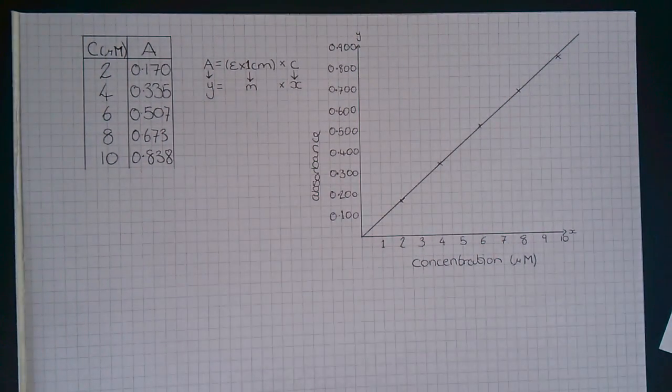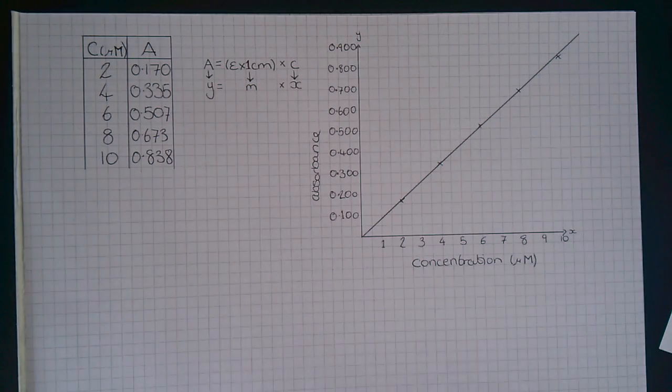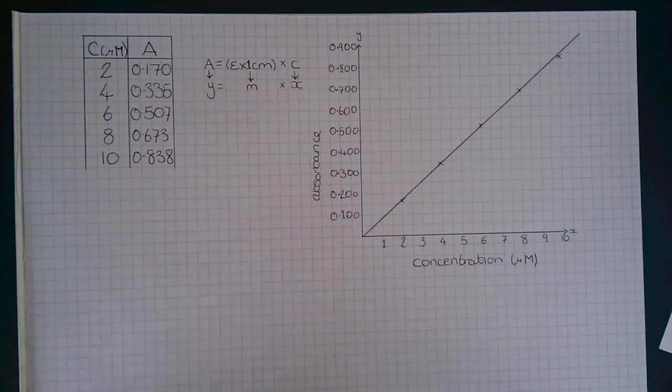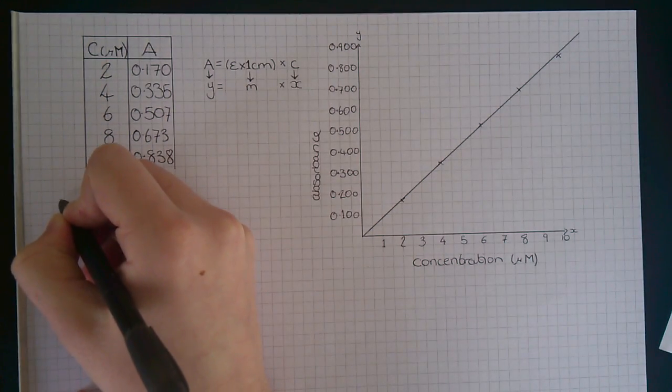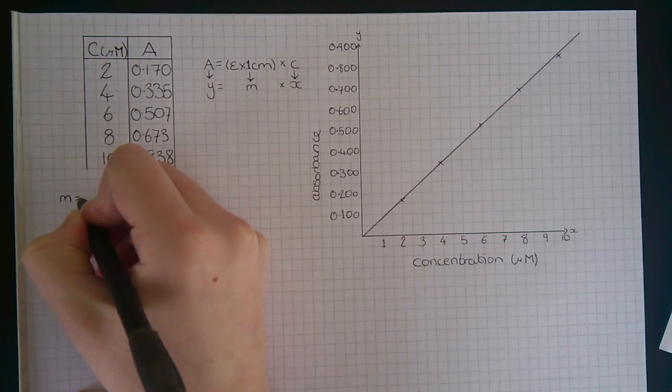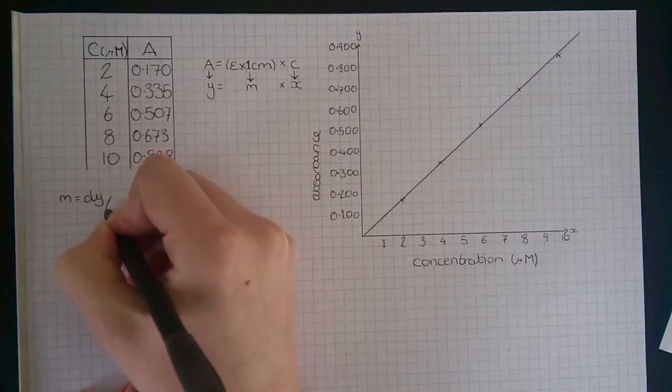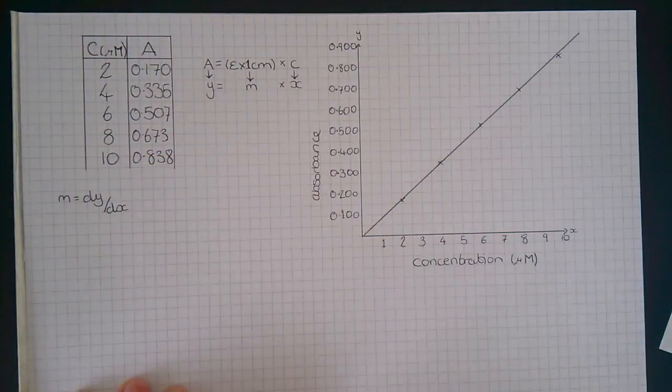As in our video Gradients of Straight Line Graphs, we're going to use the change in y divided by the change in x to work out m. This is also written as dy by dx. So m equals dy by dx, where m is once again the gradient.